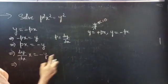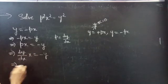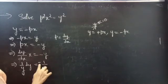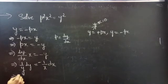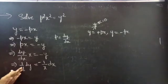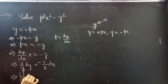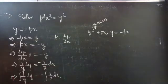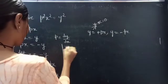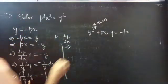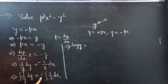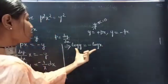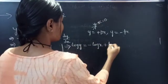Take dx to the RHS and bring y to the LHS. You can write it as 1/y dy equals minus 1/x dx. Since the variables are separable, we can integrate on both sides. The integral of 1/y dy is log y, and minus integral of 1/x dx gives minus log x. Since we have both terms in log, we take the integral constant as log c.